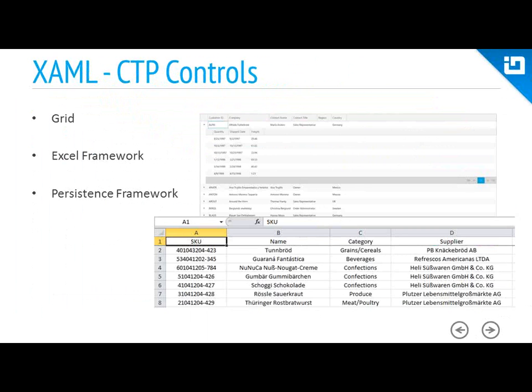Last but not least, we have our persistence framework. Basically, our persistence framework allows you to save and load the current state of a control. You define what dependency object gets persisted and what properties of that object can be saved and loaded. This is going to be very useful in Windows 8 applications when you think about your resume and suspend states of the application lifecycle. While in a suspended state, you can persist the states of your controls, and when the application resumes, you can reload that state and won't lose anything.